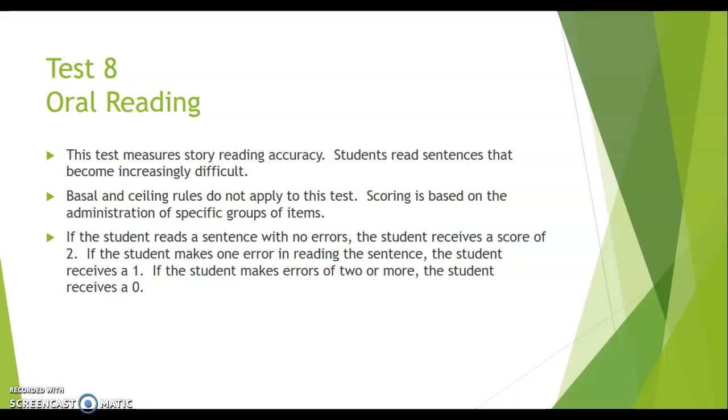So if the student receives, reads a sentence with no errors, then the student received a score of two. If the student makes one error in reading the sentence, then they would receive one. And then if a student makes two or more errors, the student would receive a zero.